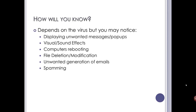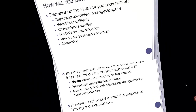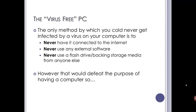How will you know if you're infected? The best viruses may actually stay hidden, but symptoms can include unwanted messages and pop-ups, the operating system freezing or locking up more frequently, machines rebooting, visual and sound effects, and files being deleted or modified such as Word documents overwritten or Windows system files altered. You might also find you're suddenly spamming your friends because of an infected virus, getting emails from friends about messages you didn't send. The only way to have a truly virus-free PC would be to never connect to the internet, never use external software, and never use a flash drive — which would defeat the purpose of having a computer.